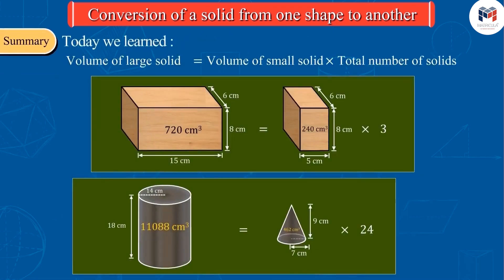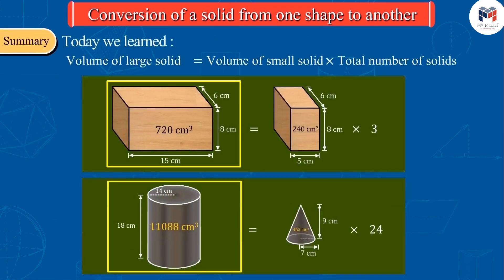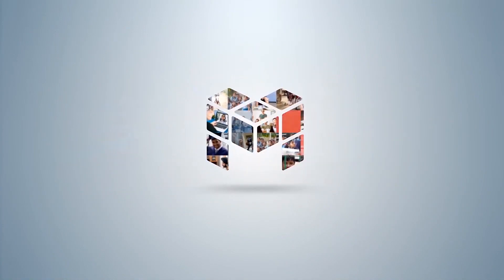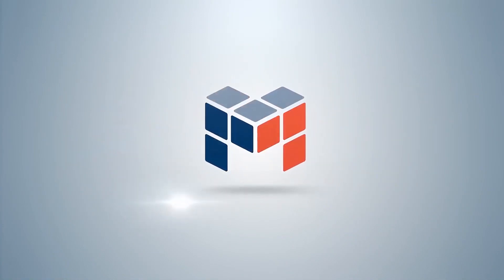Today, in this video we learnt that on converting a large solid into small solids, volume of large solids is equal to volume of small solids multiplied by the total number of solids.